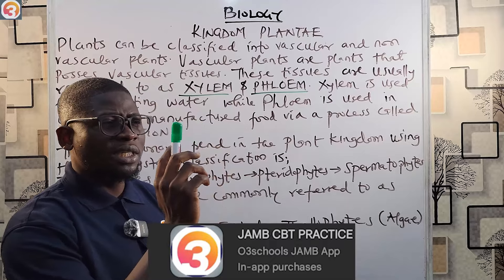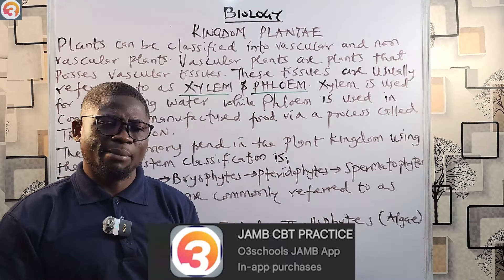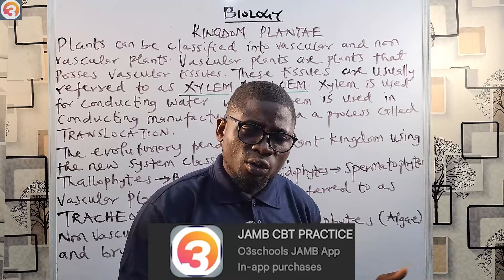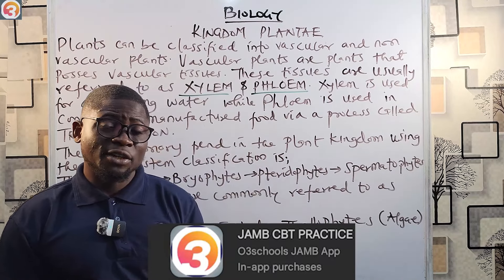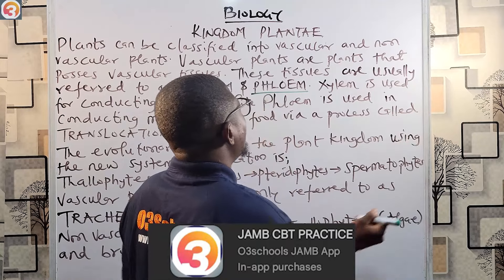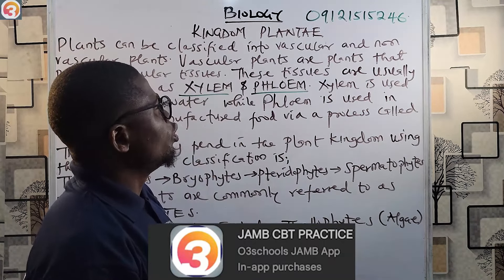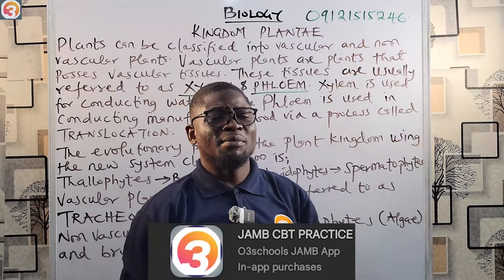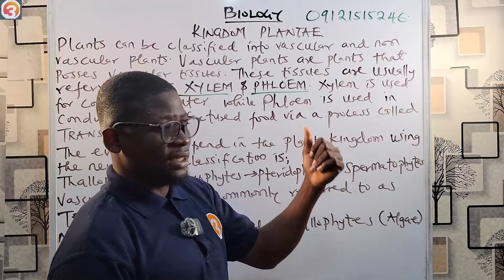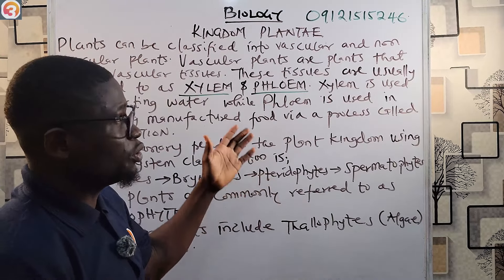After downloading the app, click on activate and at the top you'll see where it says 'buy activation key.' You can pay with your ATM card online and it will activate your app automatically and instantly, or you can transfer to the OTD Schools app account. If you transfer, you need to send the receipt of the payment to our customer number on WhatsApp: 09121515246. Once you make the payment, send the receipt to this number — anybody can pay for you. A customer care agent will be there to attend to you quickly.